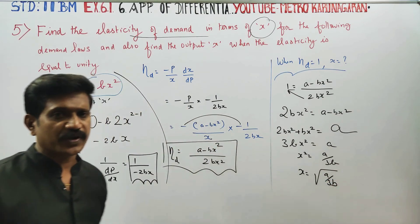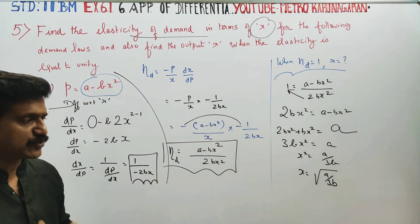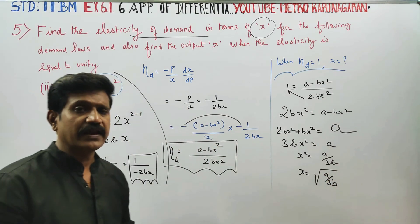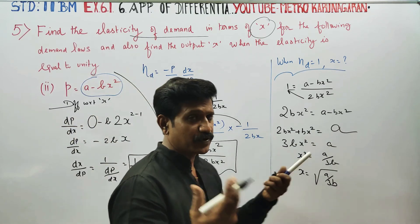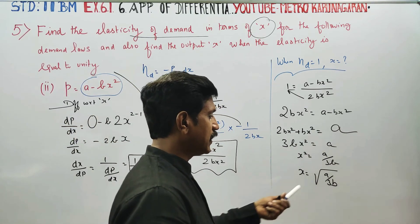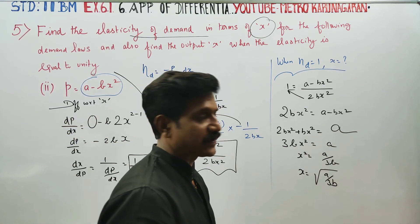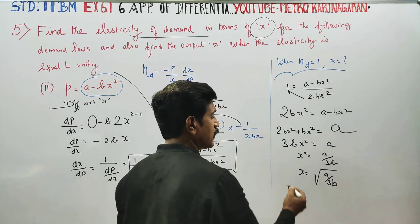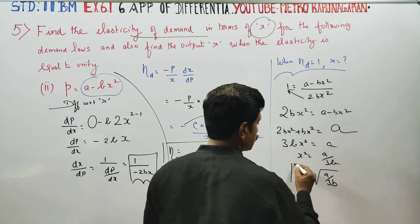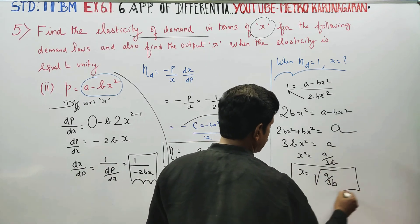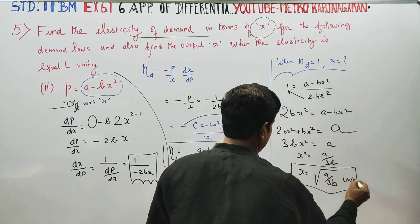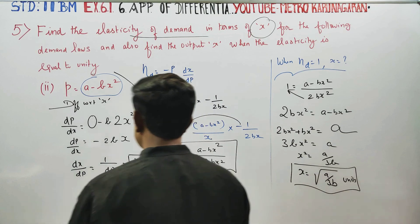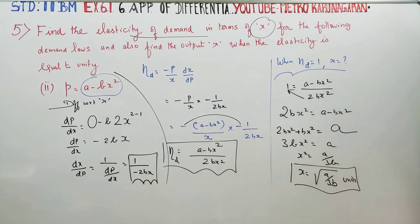Since x is the number of units, x cannot be negative, so the minus value is rejected. Therefore x is equal to the square root of A by 3B.